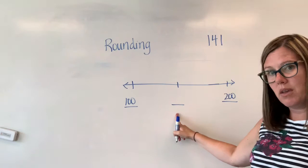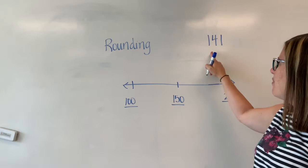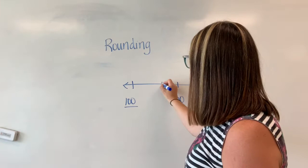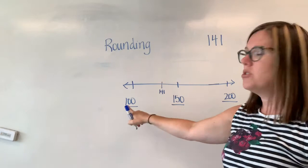Okay what number comes in between 100 and 200? Okay 150. Now if I want to put 141 on this number line I need to figure out where it fits. So I think 141 comes before 150. So it's probably around here. So that means 141 rounds to 100.